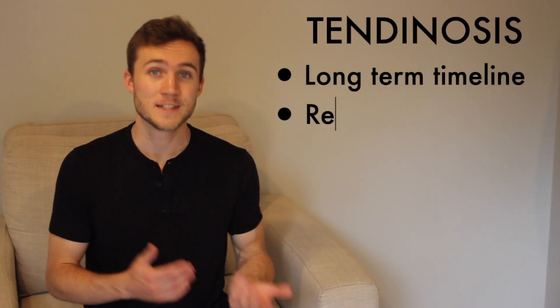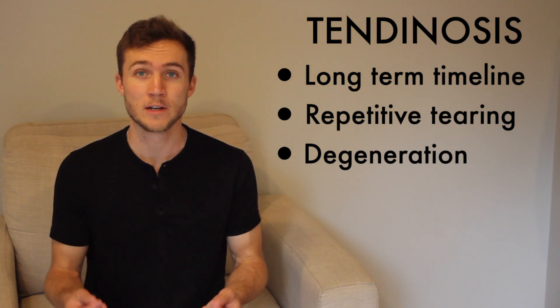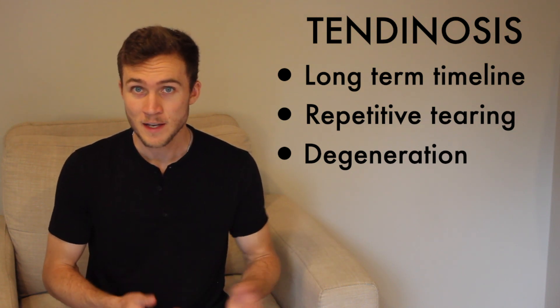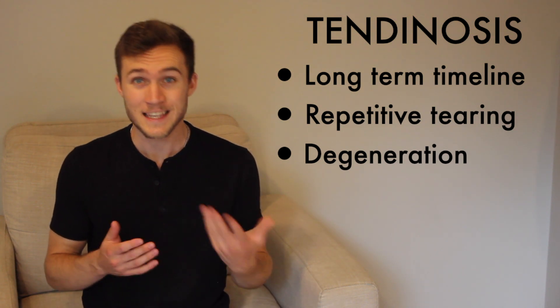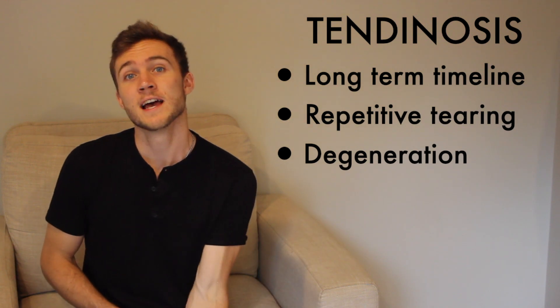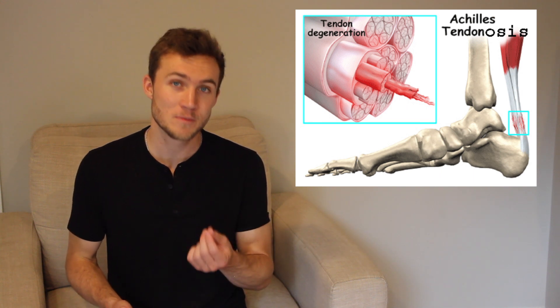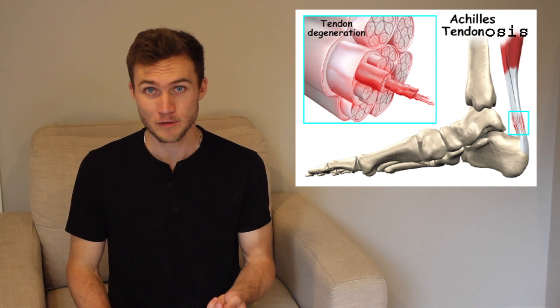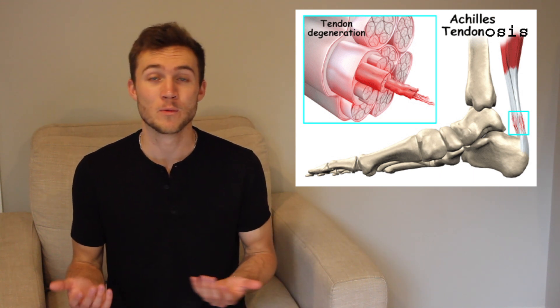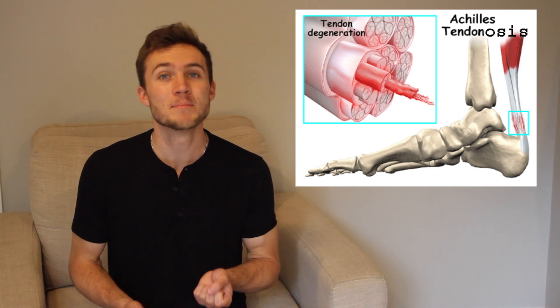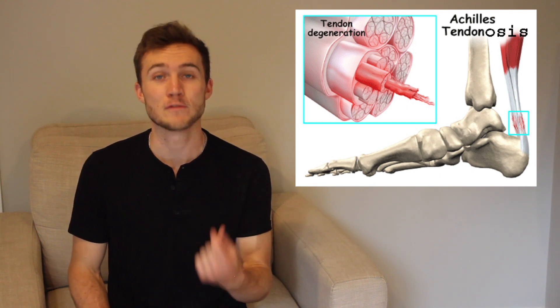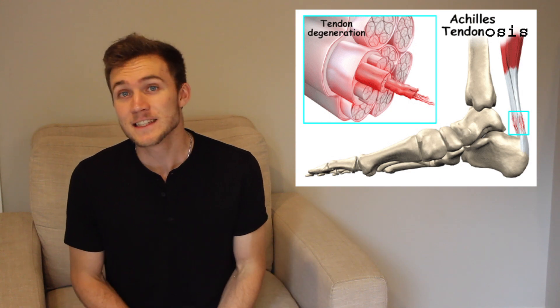Practically though, when you hear tendinosis, think long term. Let's use an example: somebody's Achilles tendon — the big tendon at the back of your heel. Over years of walking, that tendon could get irritated or have small tears happen repetitively. Since we walk fairly often, the tendon may not be able to fully repair itself or rest in between bouts of small tearing. This leads to the breakdown of the tendon over time.